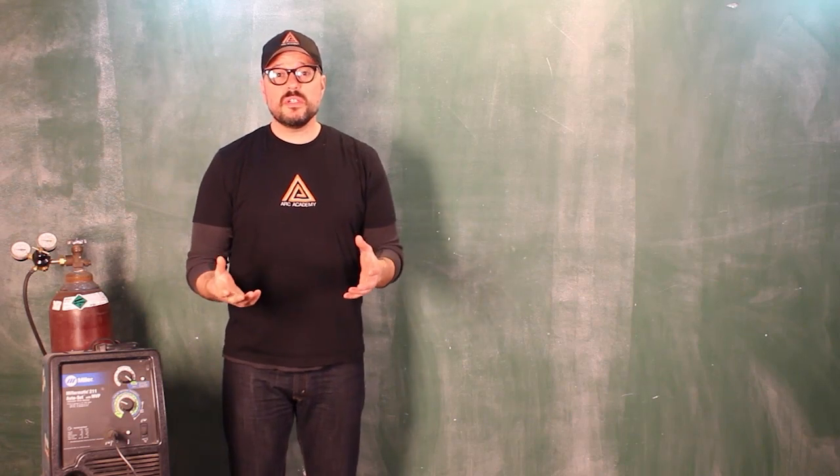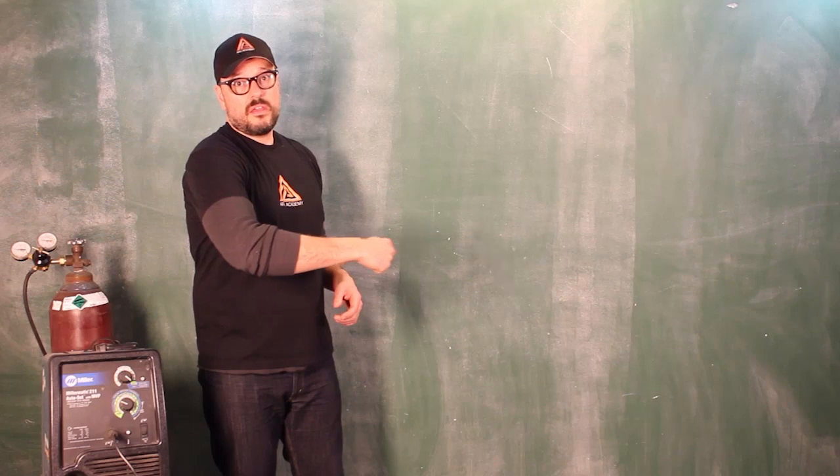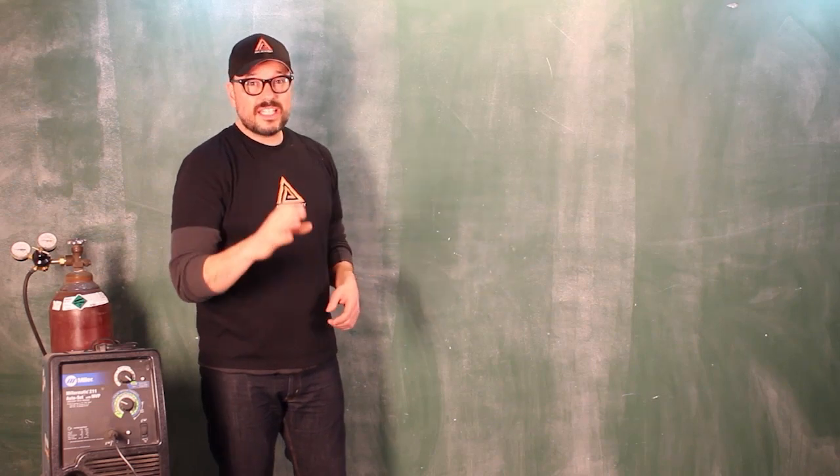So if you're welding on an eighth inch material, you only want to move an eighth inch ahead of where you're going, trying to stay on the front toe edge of that puddle.